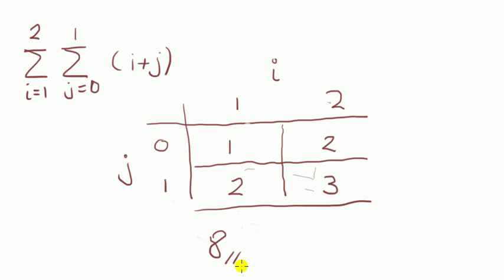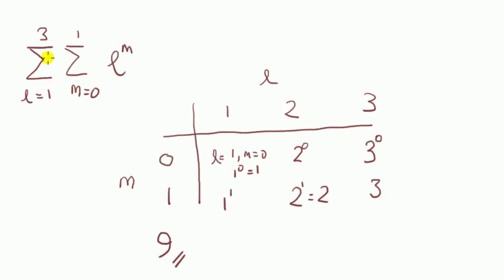Let's try another. Here we have summation from l is one to three and the summation from m is zero to one of l to the power m. What I've done in this example is I've used l and m instead of i and j. I just want to show you that the label link doesn't really matter. Here's the table then. l goes from one to three, m zero and one.